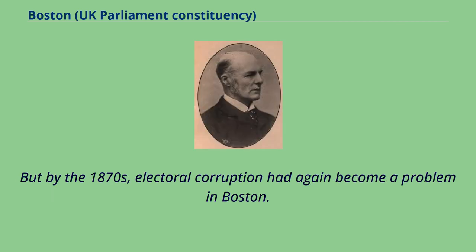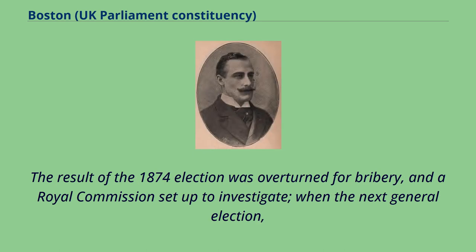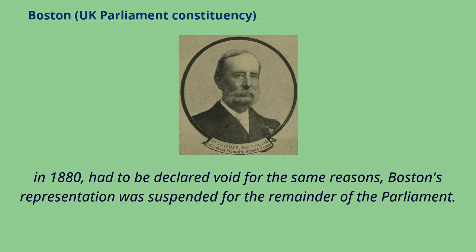By the 1870s, electoral corruption had again become a problem in Boston. The result of the 1874 election was overturned for bribery, and a royal commission was set up to investigate. When the next general election in 1880 had to be declared void for the same reasons, Boston's representation was suspended for the remainder of the parliament.